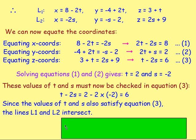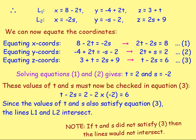What would it mean if you substituted the values in and got a different number — say 19 instead of 6? That would mean the values of t and s didn't satisfy the equation, which would mean the lines do not intersect.